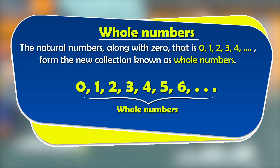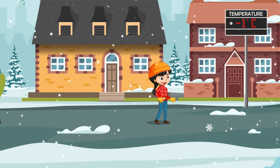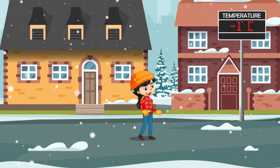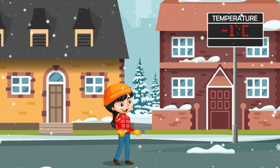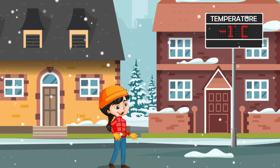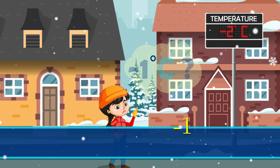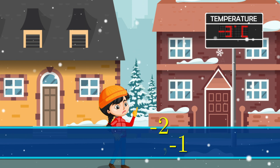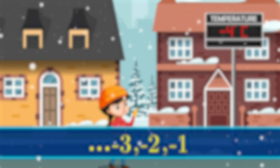Now the students could see the weather station display the temperature as minus one degree Celsius. What happens when a negative sign comes in front of a natural number?